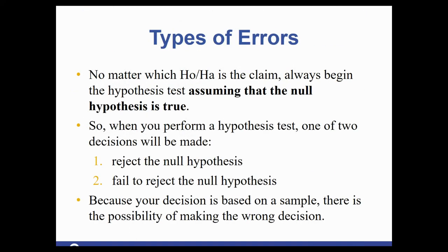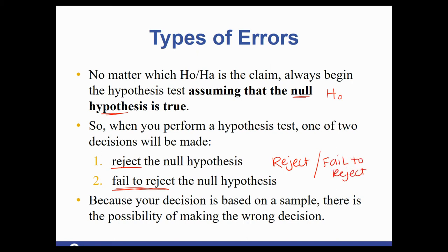Regardless of which one is the claim, we always go through this process assuming the null hypothesis is true. The whole process of a hypothesis test is testing H₀. When you finish, you've compared the numbers and you make one of two decisions: we either say we reject, or we say fail to reject — always in reference to the null hypothesis.